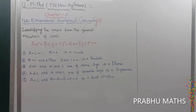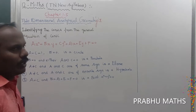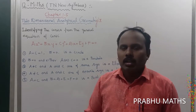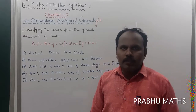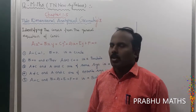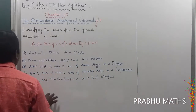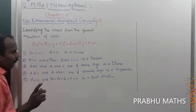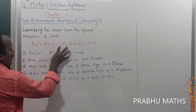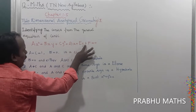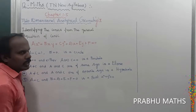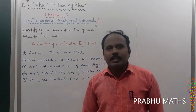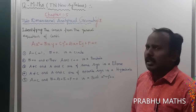Identifying the conic from the general form of the conic equation. Given any equation, we need to find out which type of conic it is — parabola, ellipse, hyperbola, point, or circle. The general conic equation is: ax² + bxy + cy² + dx + ey + f = 0.